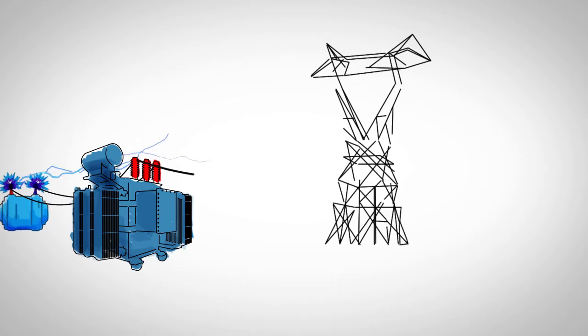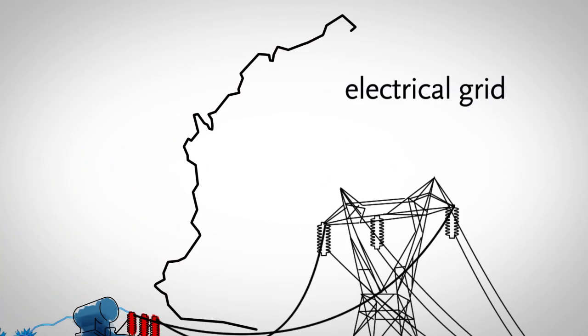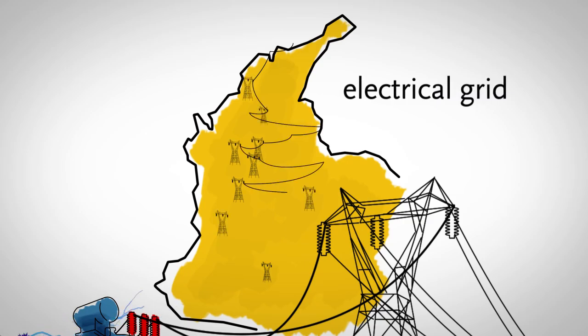Here a long journey begins, traveling through thick cables held up in very high towers. These transmission lines are interconnected with other power plants, creating a network called the electrical grid.